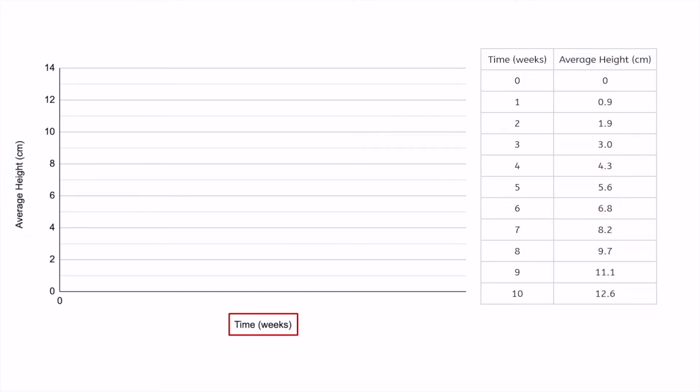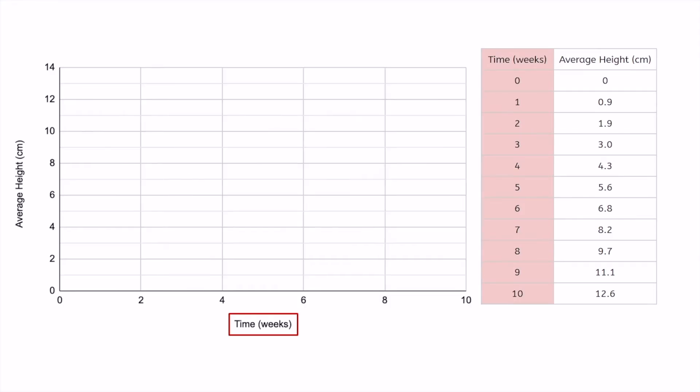For the x-axis, my data shows 10 weeks, so I'll label this axis from 0 to 10. All right, our graph is coming together. Let's go ahead and add a title as well.